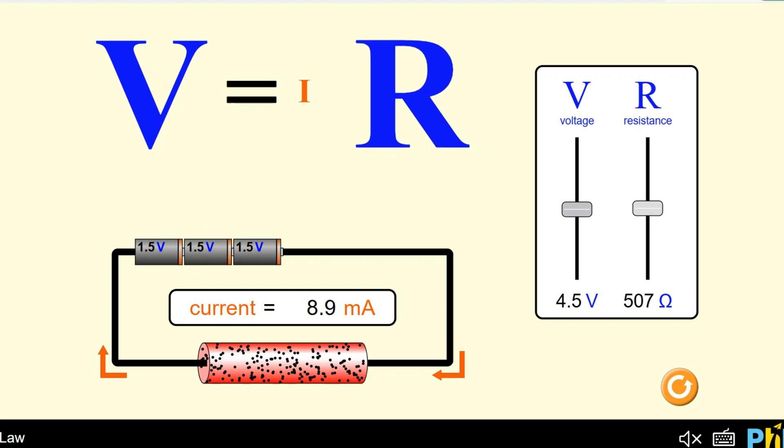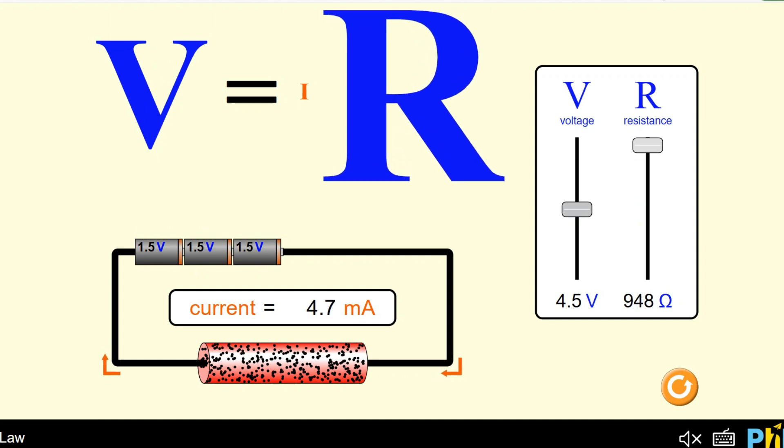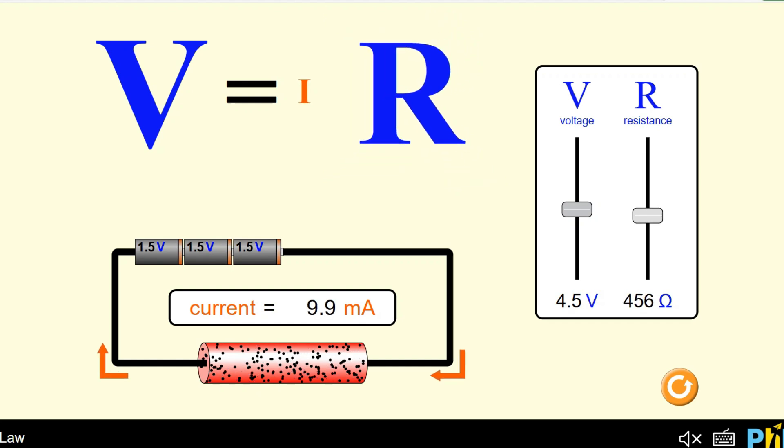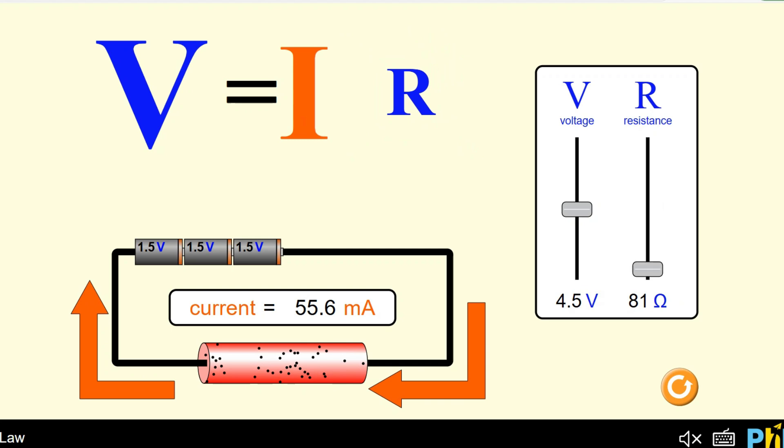So you can see how changing voltages can change the speed at which power flows through the circuit. Likewise, resistance has the same effect only on the opposite manner. So if I increase resistance, that is going to decrease the flow of power through the system or our current or amperage. If I decrease the resistance, you can see our current can now flow faster and faster. And so we have a higher amperage.